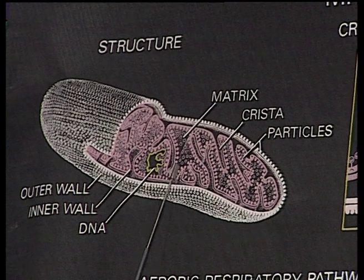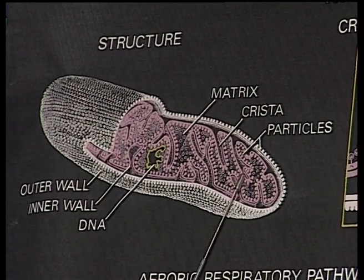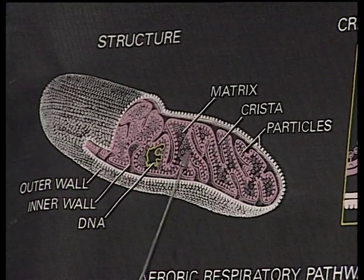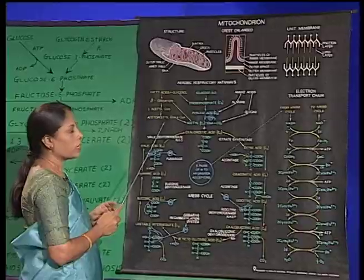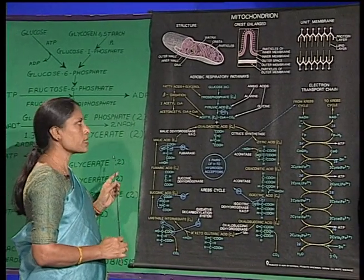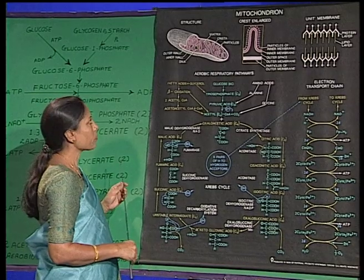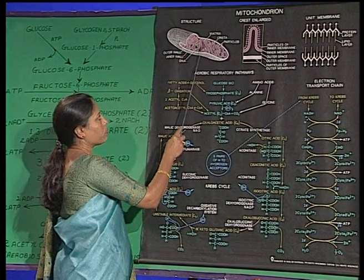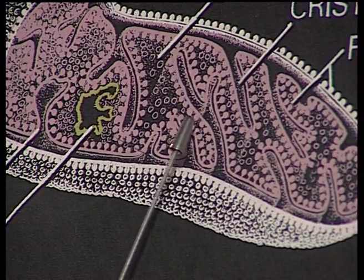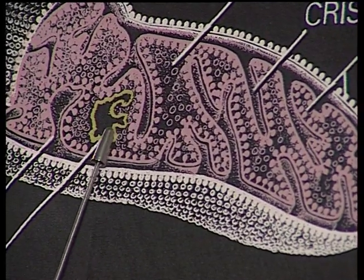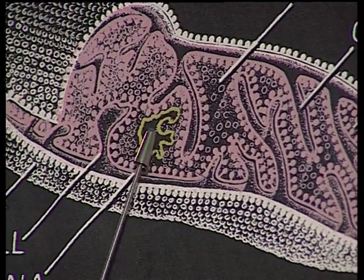The matrix is filled by a dense proteinaceous substance. We also find the presence of some granules in this matrix, which are sites for magnesium and calcium molecules. We also find some thread-like processes in this matrix. Apart from that, we see circular DNA, which is the characteristic feature of the mitochondria.